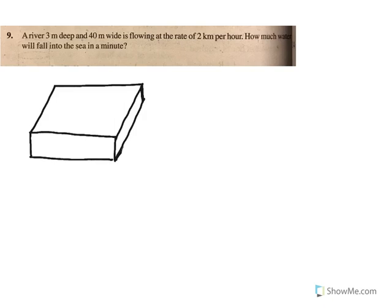A river 3 meters deep and 40 meters wide is flowing at a rate of 2 km per hour. How much water will fall into the sea in a minute? When we first think of a river, we think of what shape it looks like — it looks like a cuboid.